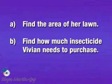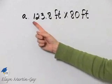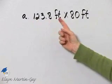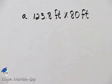So let's begin with part A. Do you agree that to find the area of her lawn, we multiply length times width? Here's how we find the area: 123.8 feet multiply that by 80 feet.